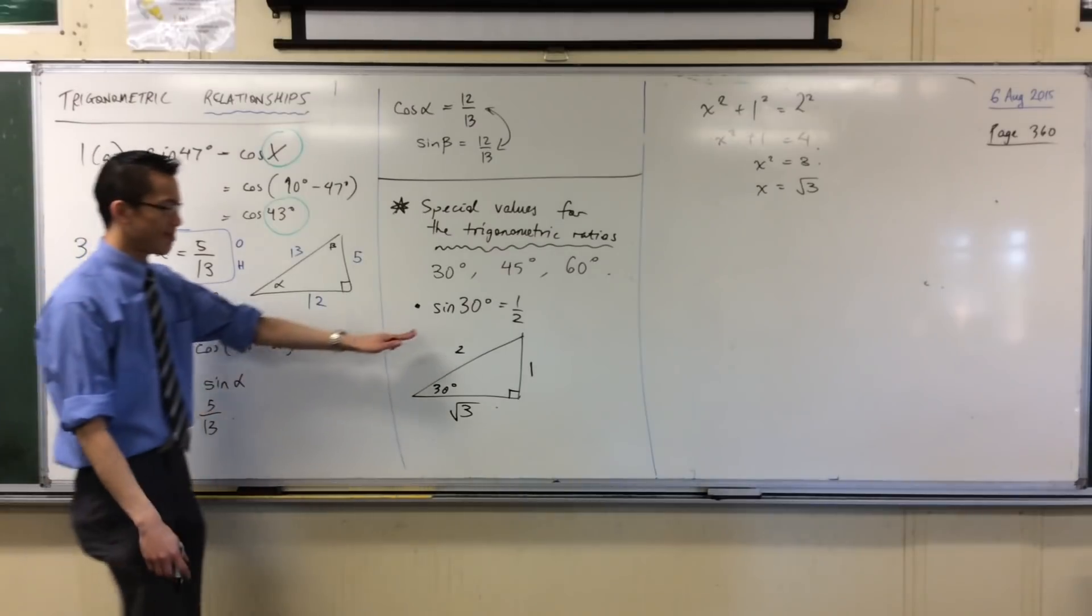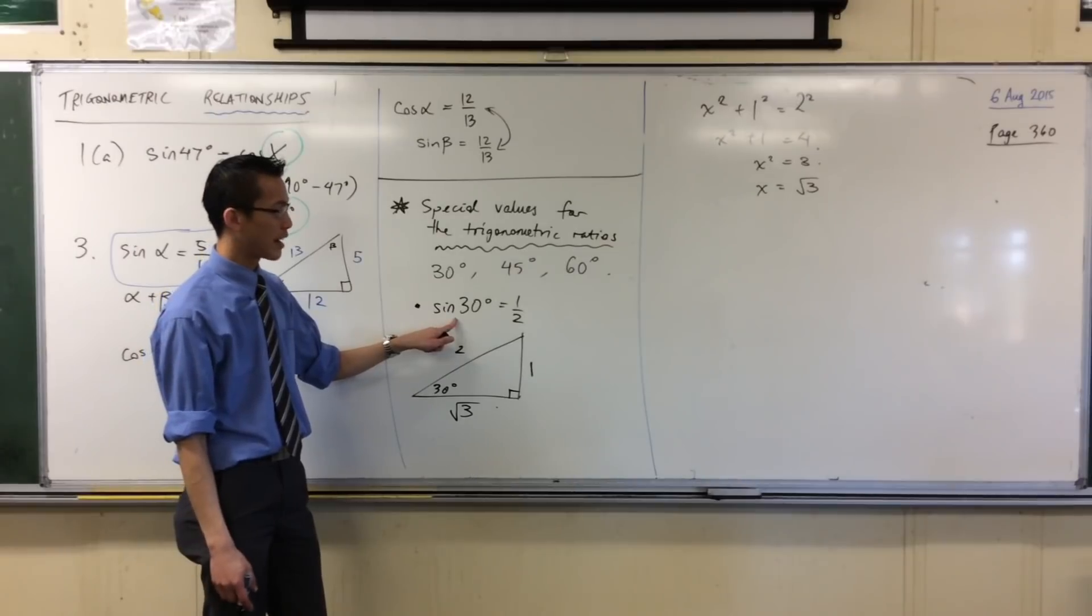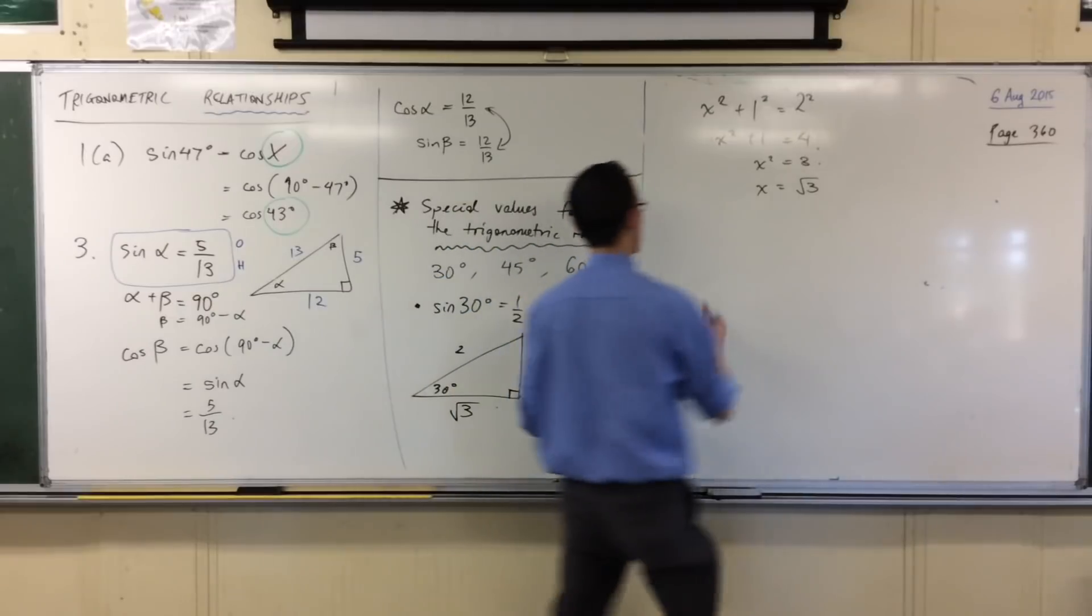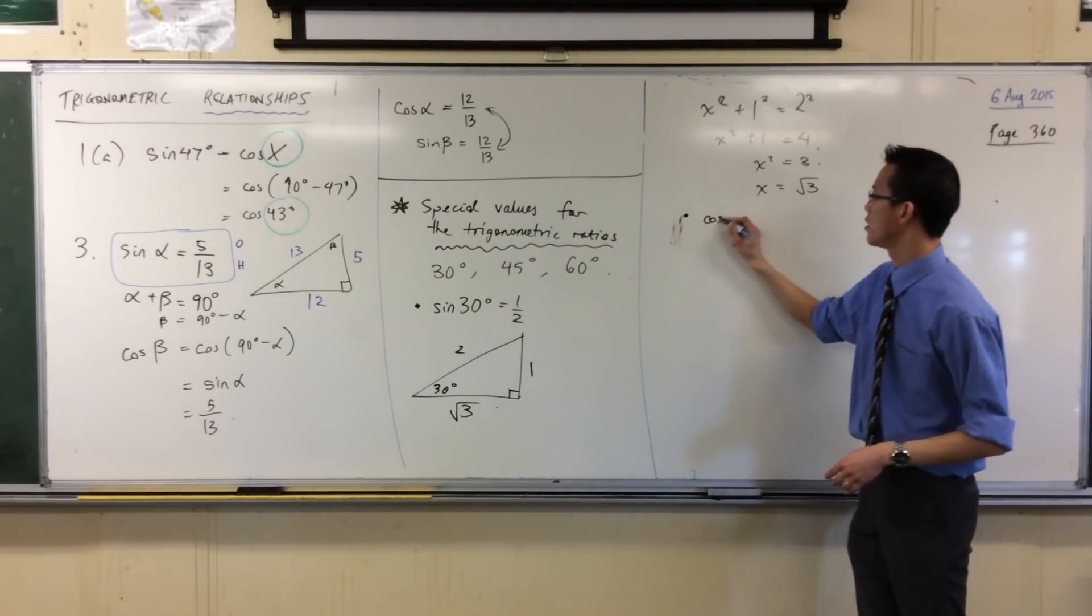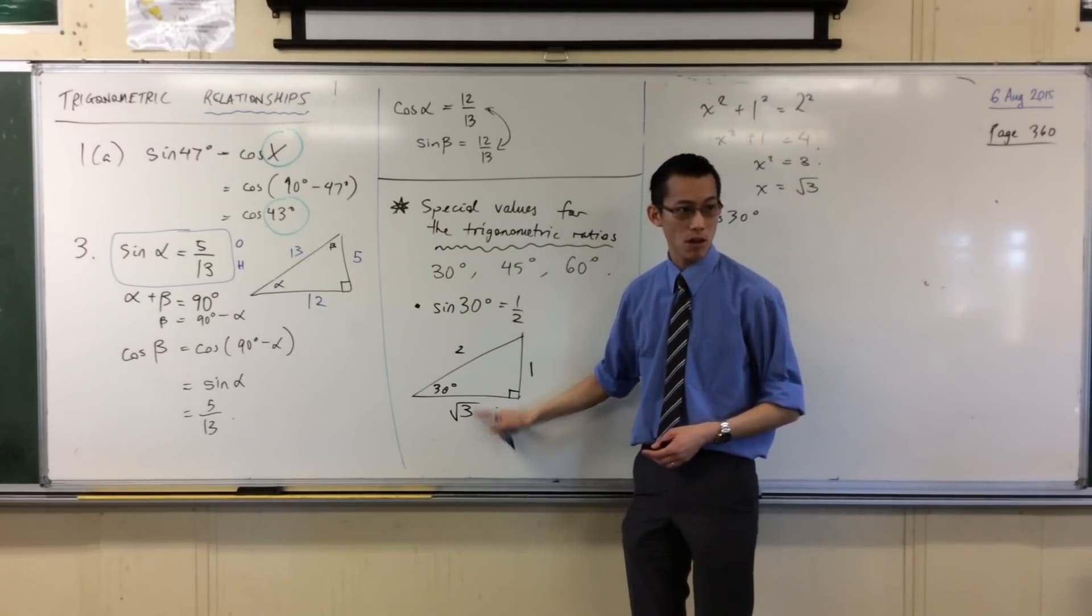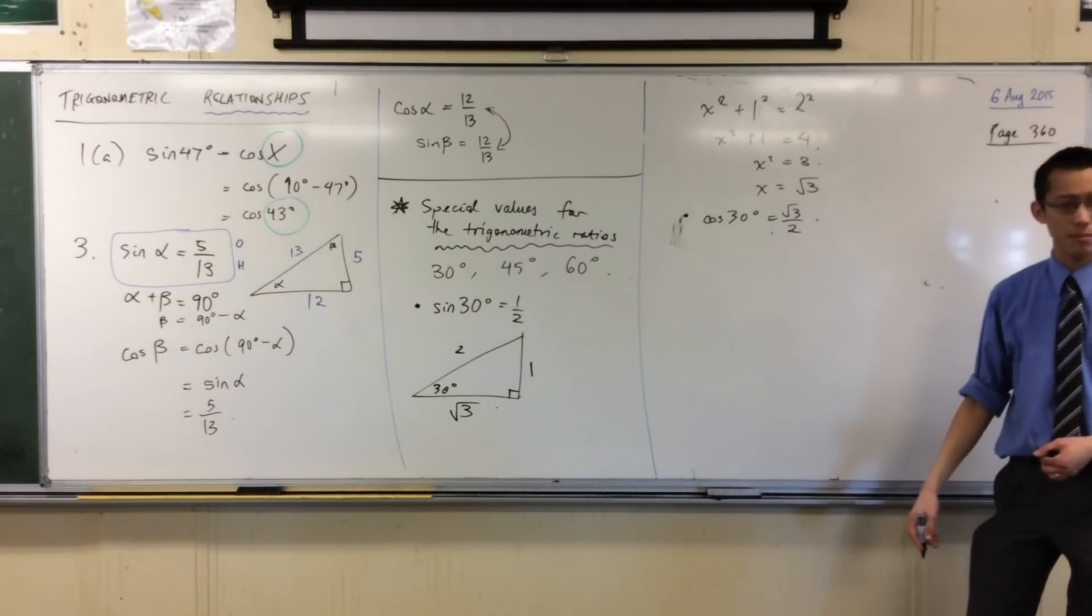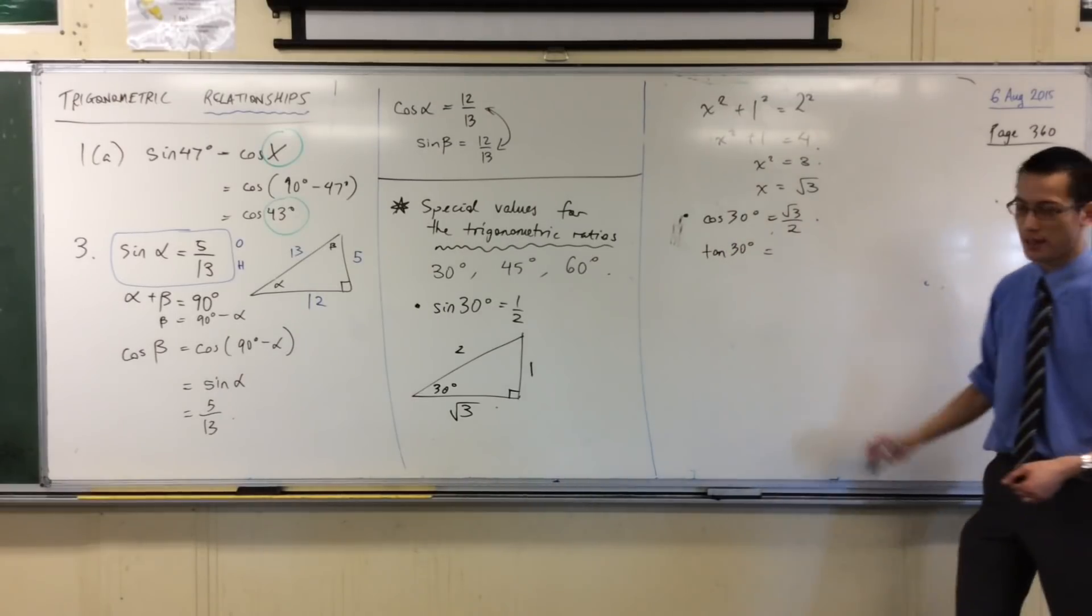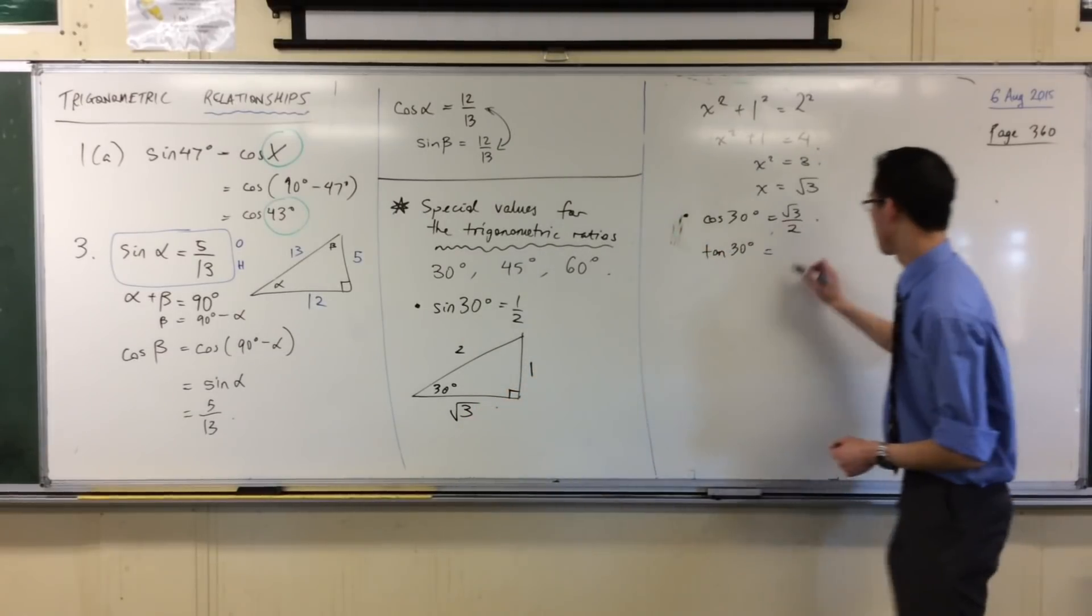Now that I know all three sides in here, I don't just know sine 30. I can also work out cos 30 and tan 30. And they should give me these nice numbers. I should be able to say, cos 30 is going to be adjacent on hypotenuse, root 3 on 2. And lastly tan, for this angle, tan 30. That's going to be opposite on adjacent. 1 on root 3.